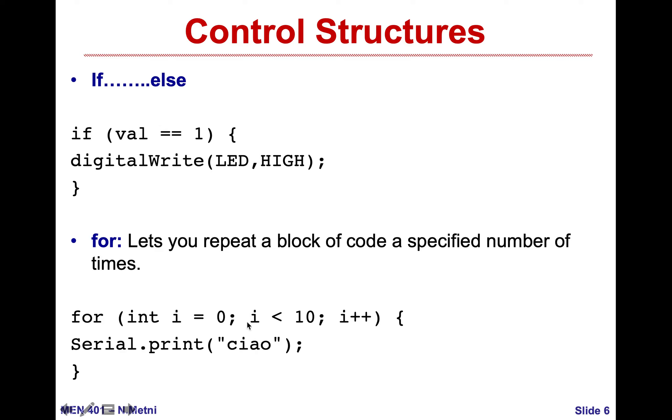Then we have the for loop. The for loop lets you repeat a block of code for a specified number of times. For example, for int i equal to zero, I am creating a variable called i and setting it equal to zero. Each time I get into this for loop, I will increase i by one.